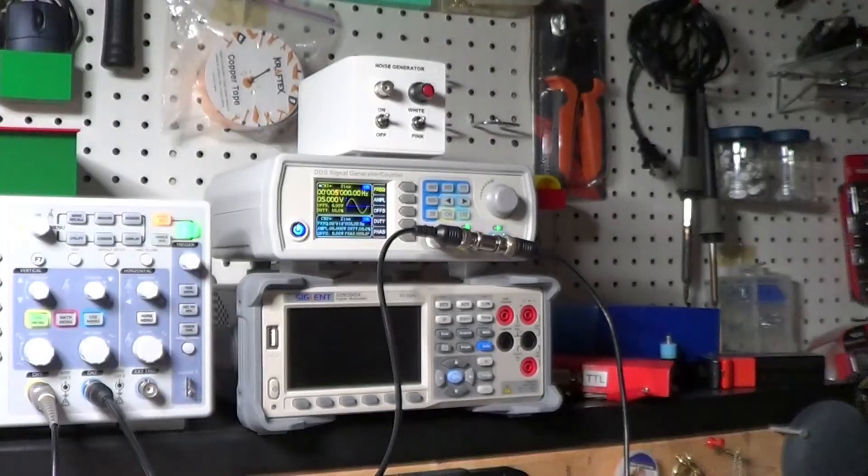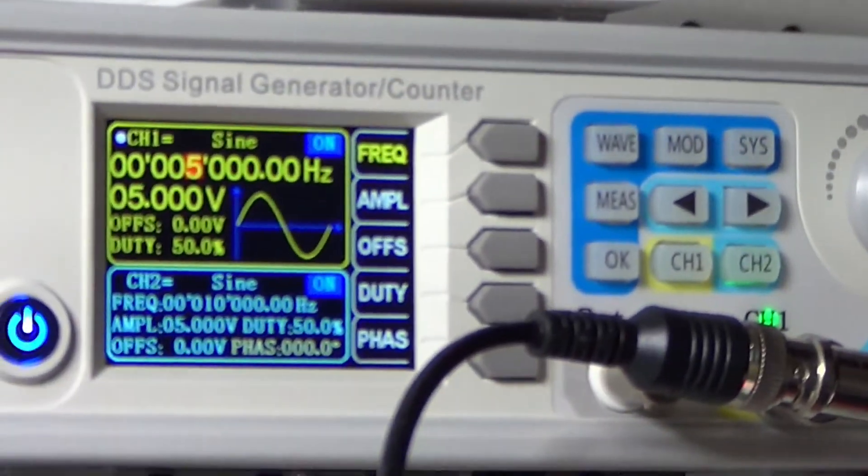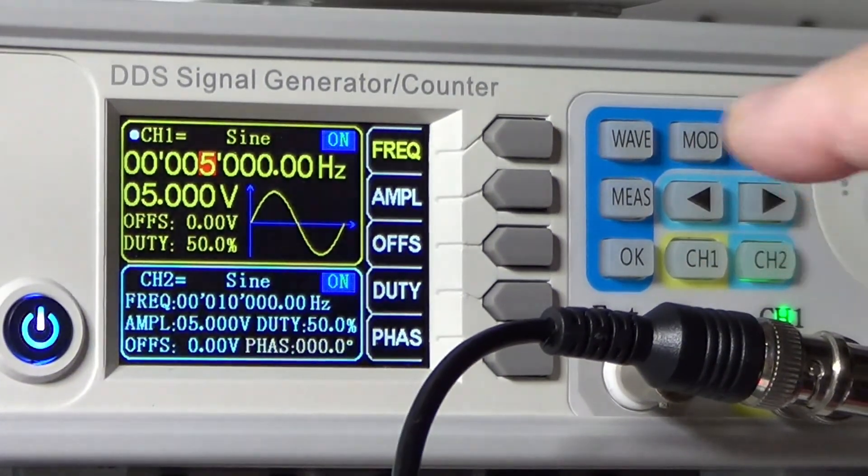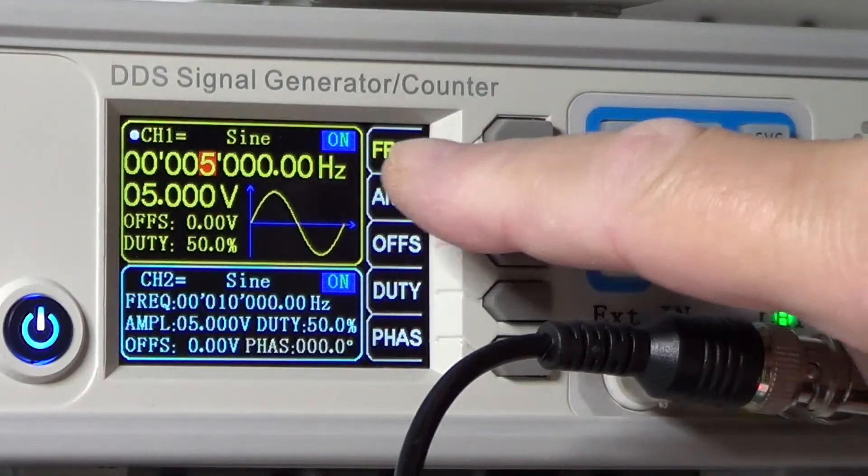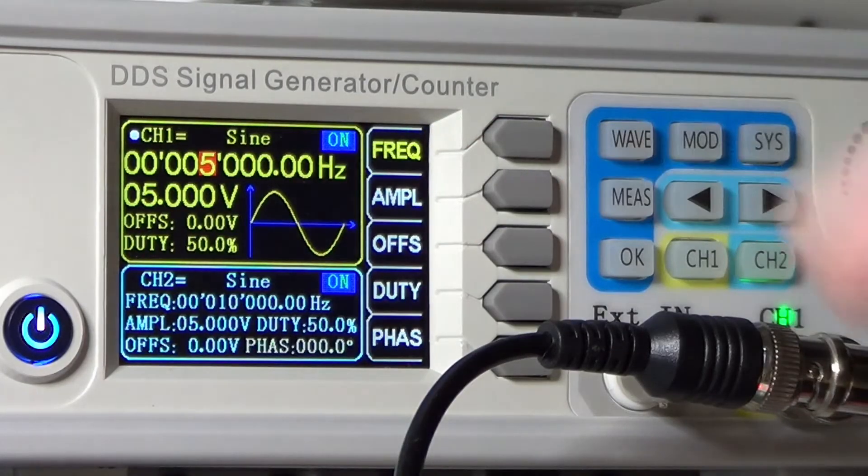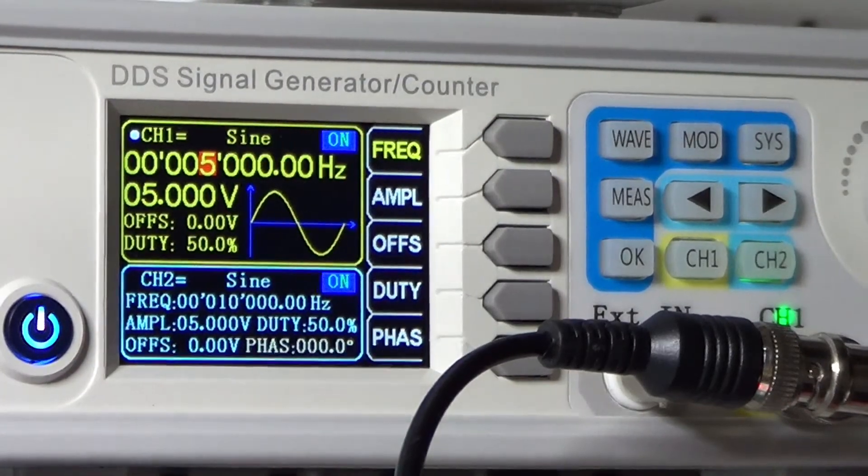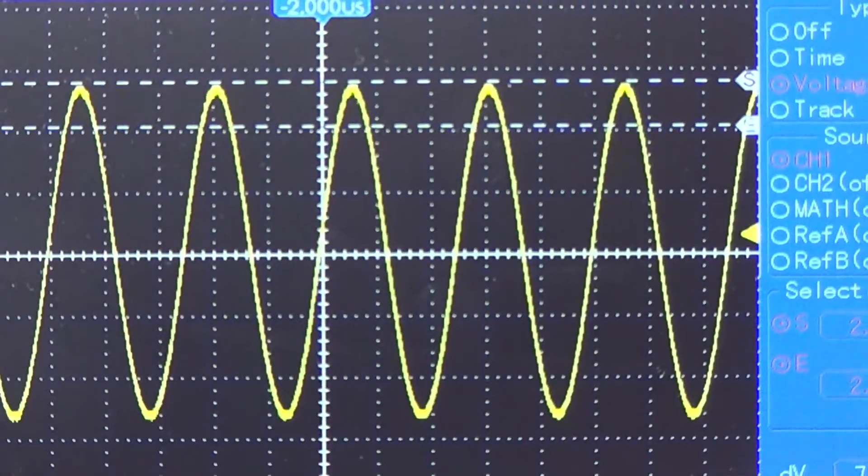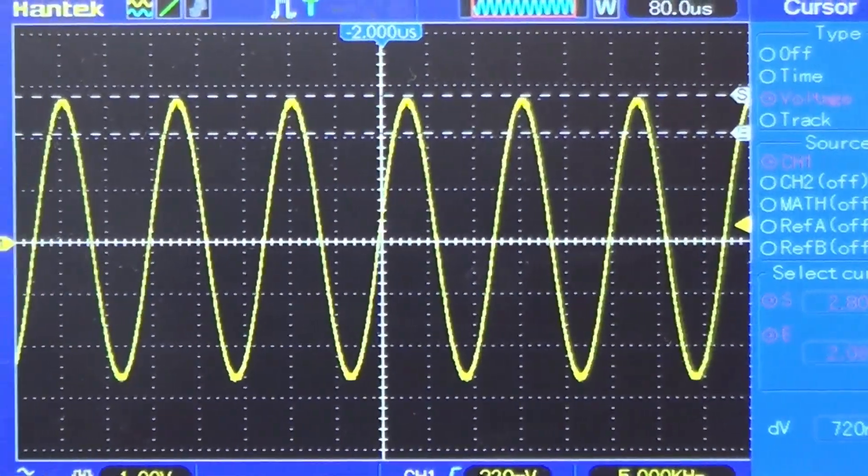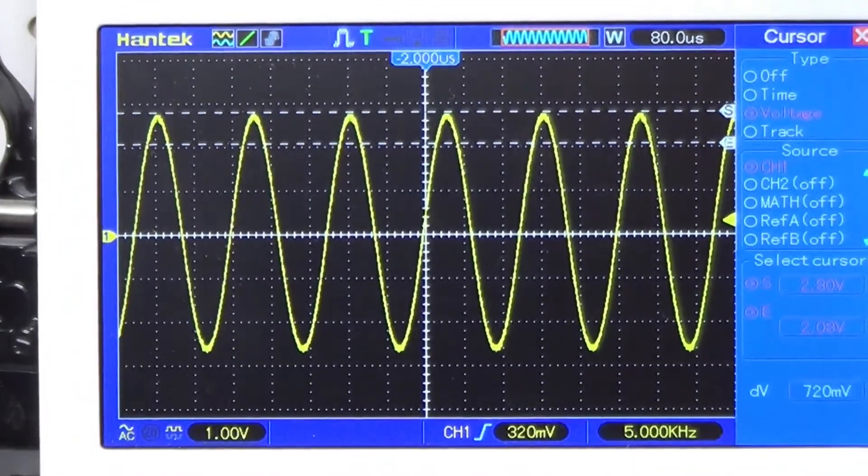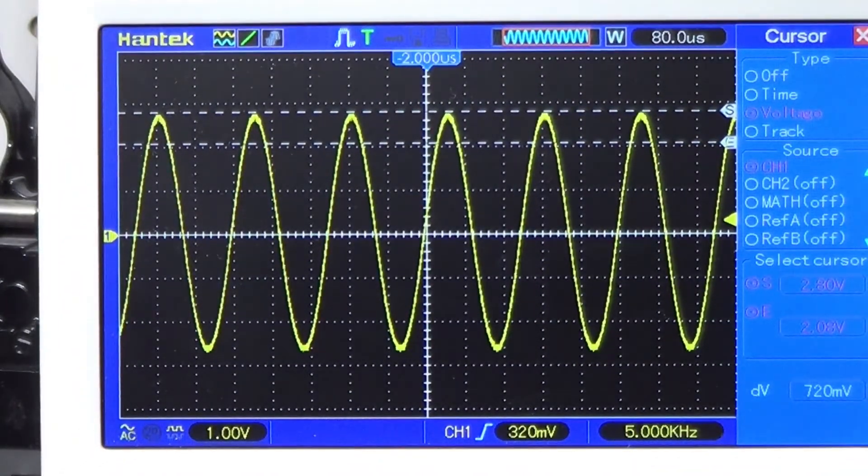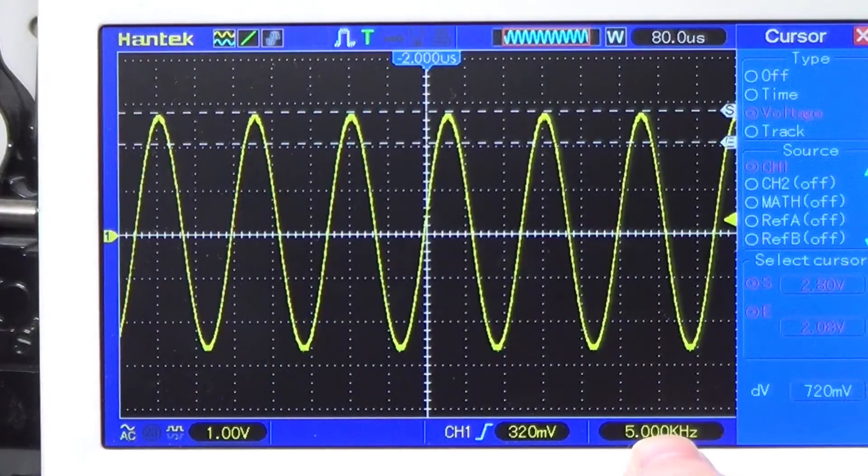Here is the function generator. And you can see right now we have a sine wave of 5 kHz and 5 volts peak-to-peak. And on the oscilloscope we can see the effect of the filter at this frequency. And now if I go up and down through the frequency, as you see right now it's 5 kHz, let's see what the effect is.